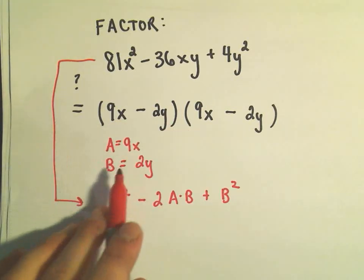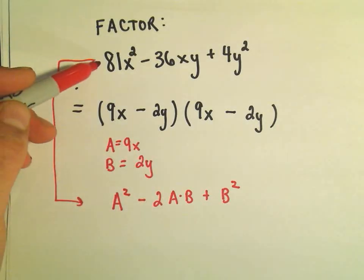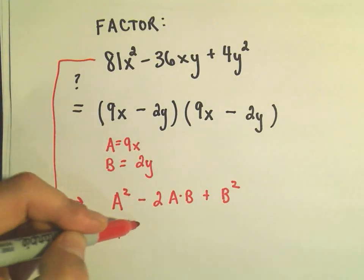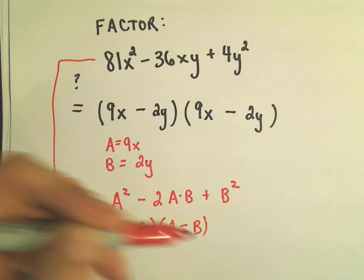If you were to fill this in using these values, we would get the original back. It factors as (a - b) times (a - b), and that's what we just did.